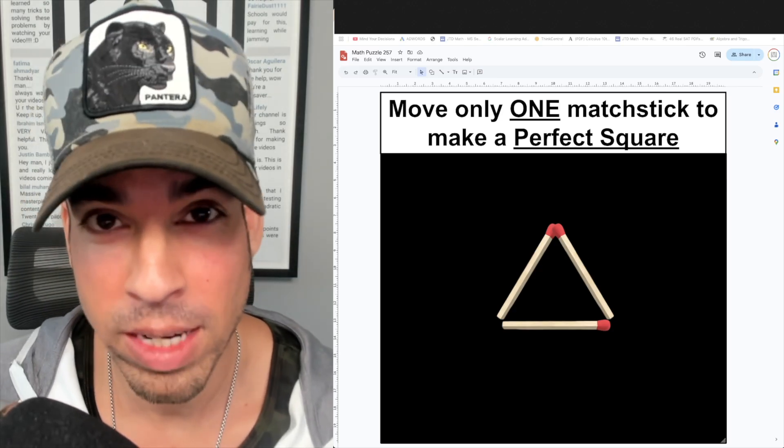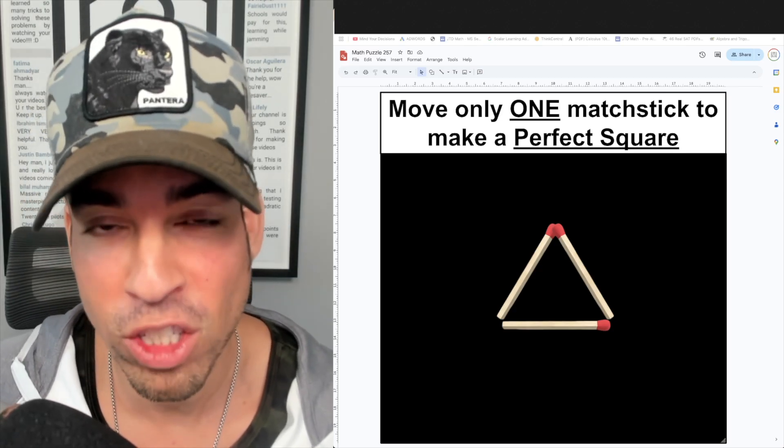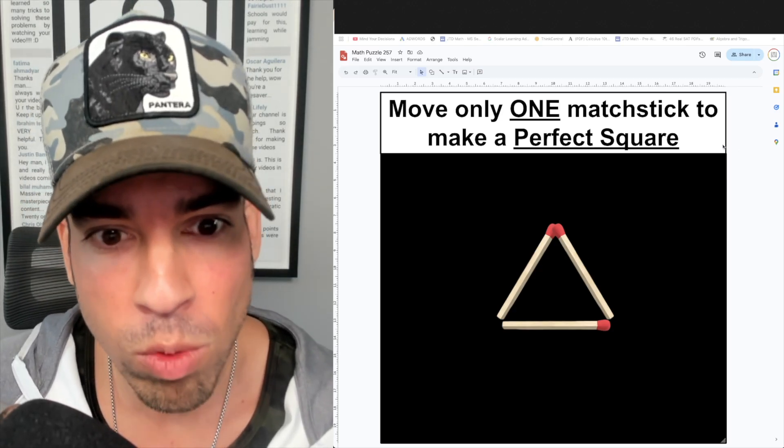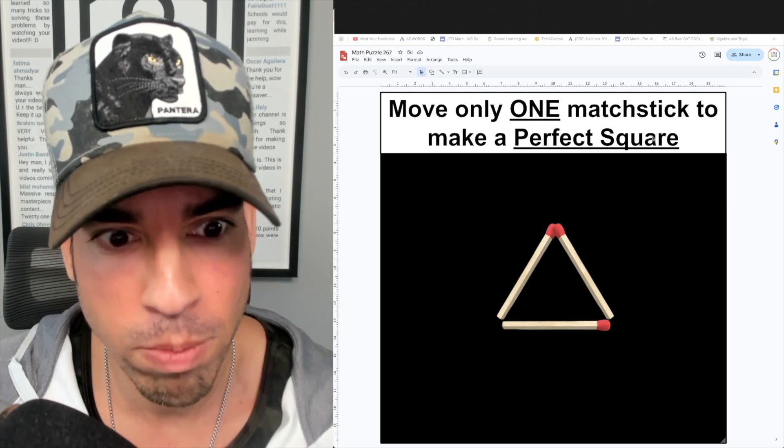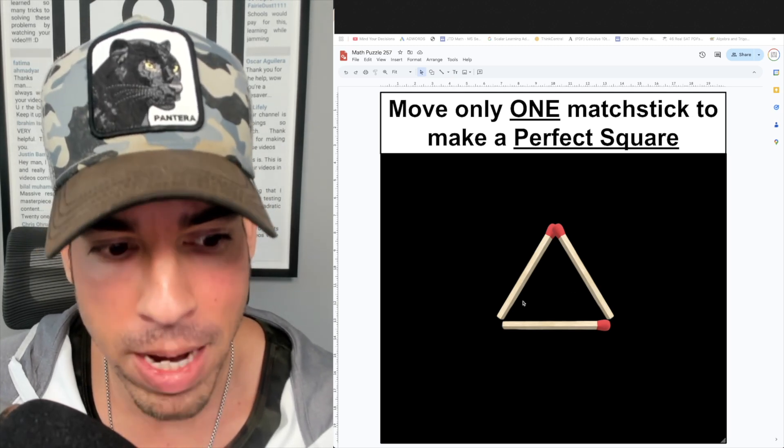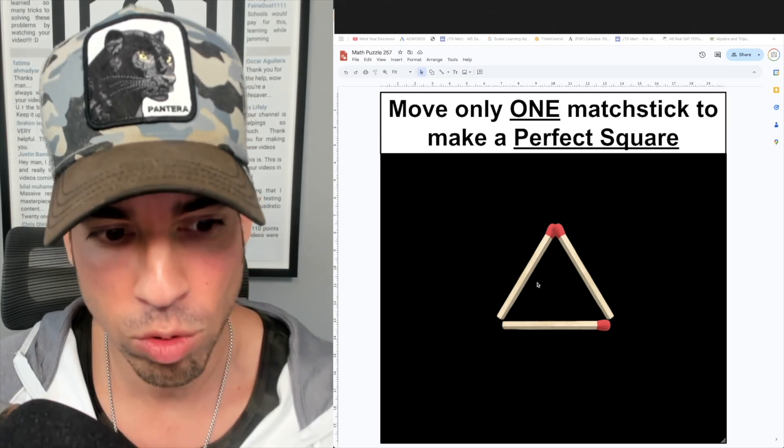What's up everybody and welcome back to another math puzzle. In this one, the question is as follows: move only one matchstick to make a perfect square. So right here we have three matchsticks making a nice equilateral triangle.